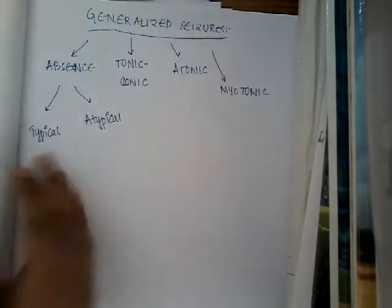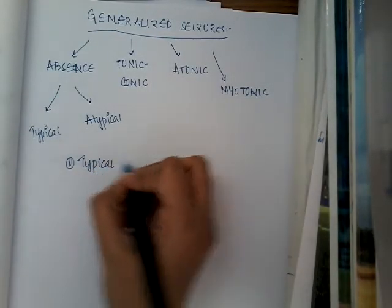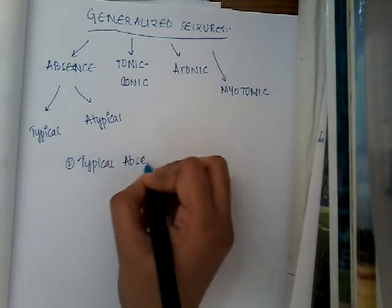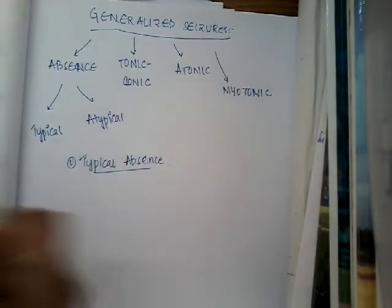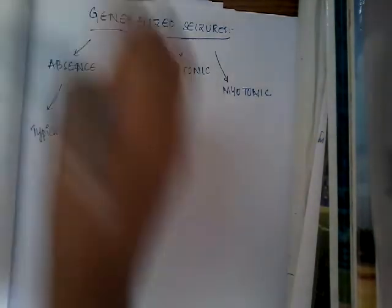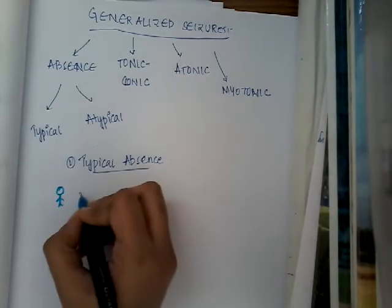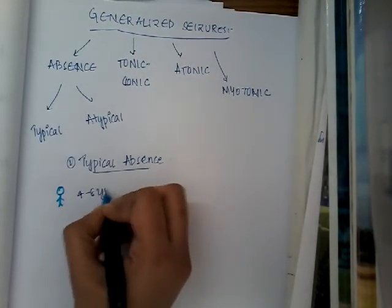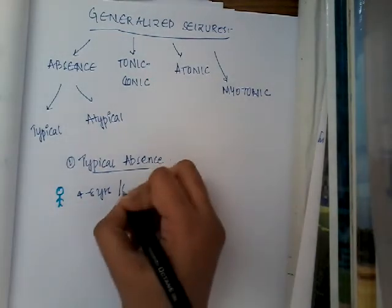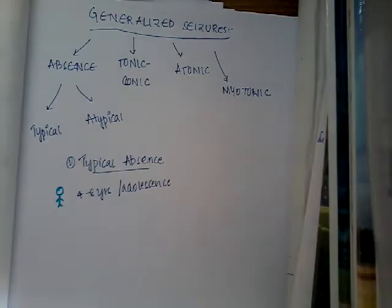So let us learn about absence seizures, in that typical absence seizures. Okay, in typical absence seizures, what is a typical absence seizure? It generally occurs in children who are between the age group of four to eight years or it can also occur in adolescence. It can occur in children or adolescence.